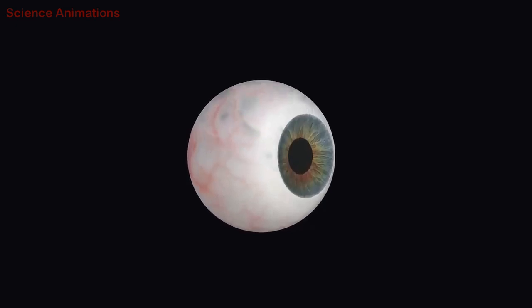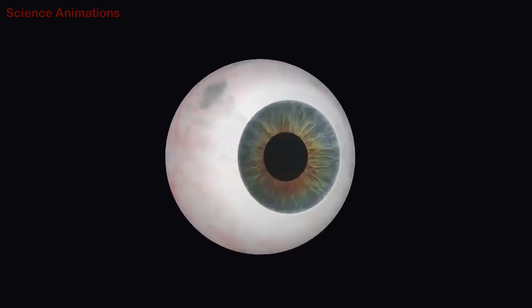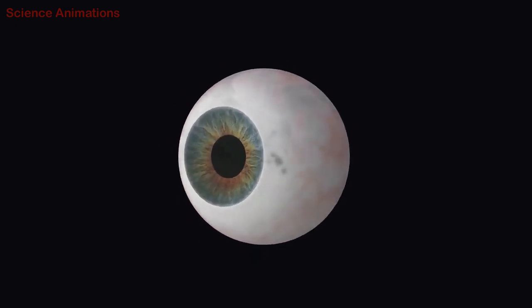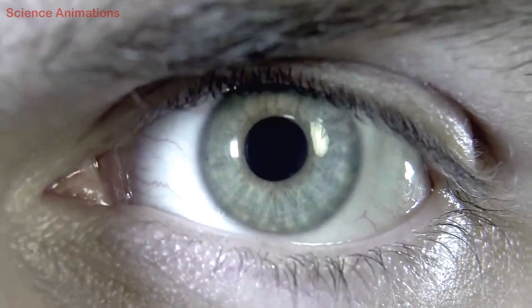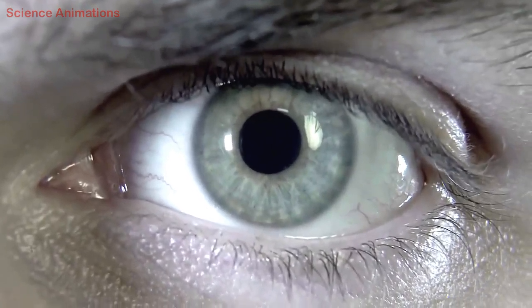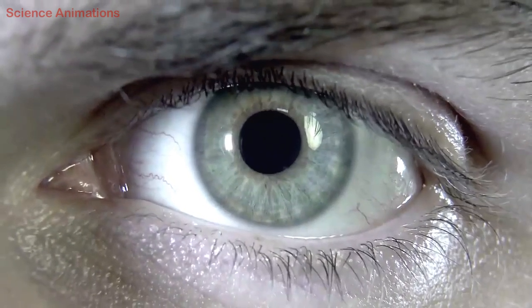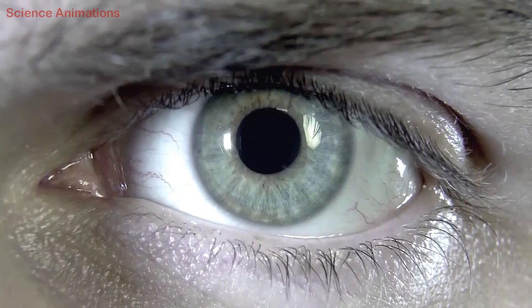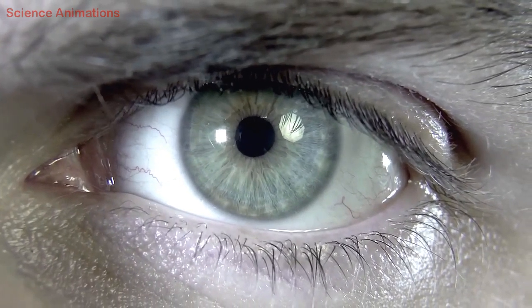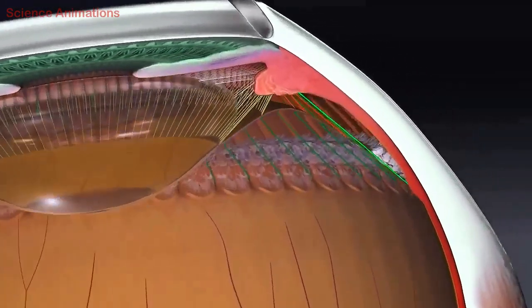The pupil is a black dot located in the middle of the eye. The iris surrounds the pupil and controls the amount of light entering the eye. When the surrounding environment is dark, the iris allows more light to enter the eye. Conversely, in bright surroundings, the iris restricts the amount of light entering the eye.